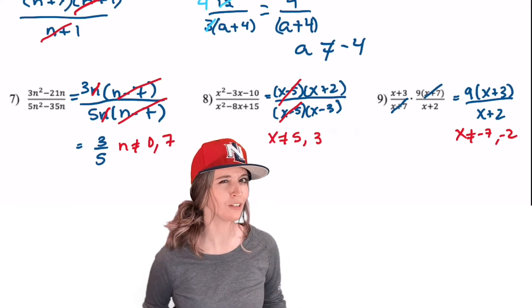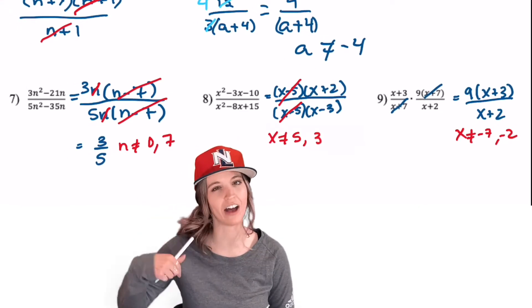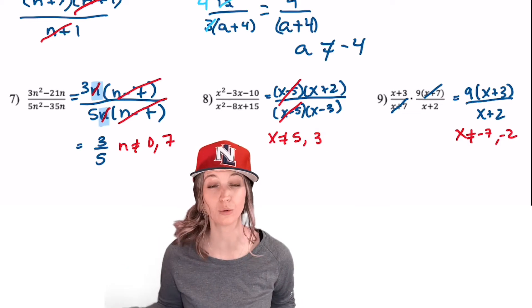Check it out! I hope you got a triple! Did you notice in number 7 that when we divide those n's out, we have to exclude n equals 0?